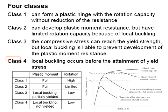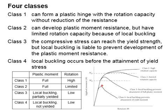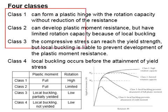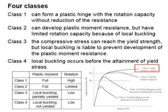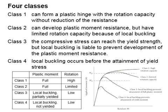For sections of class four, local buckling occurs before the yielding stress. The rotational degree is also very low. For your information, high rotational degree is preferable as it provides symptoms of failure for survival purposes. To conclude, class one is the top priority. We can design the moment based on Eurocode calculations for the plastic moment and it possesses a high degree of rotational capacity.